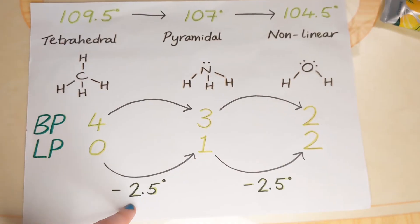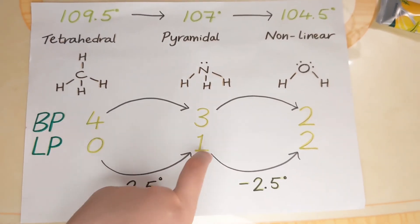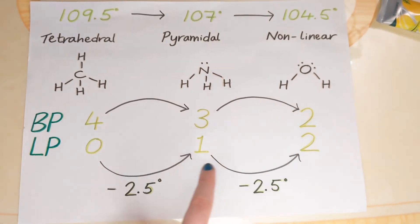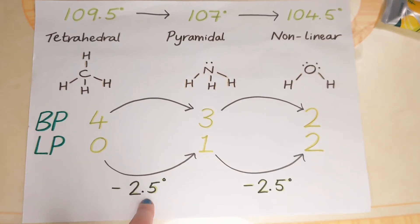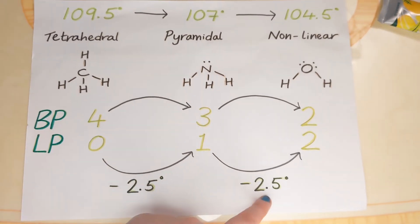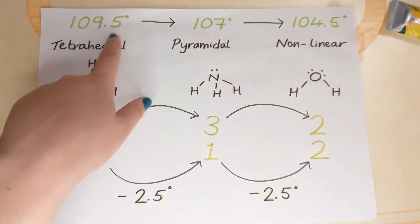And if we look at the bond angle, for every extra lone pair that we gain, the bond angle decreases by 2.5 degrees. And we can see that here.